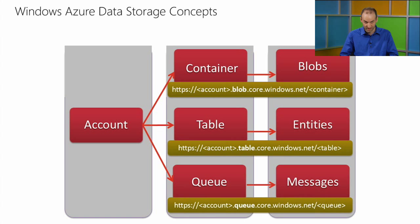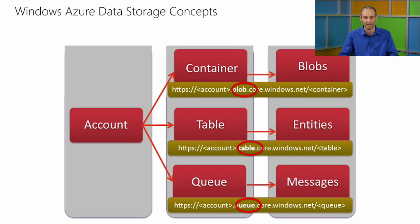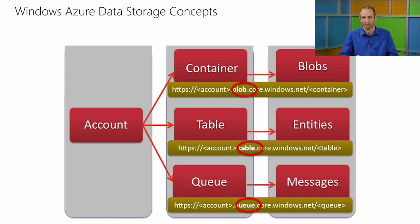For each of these services, we have a URL specific to that service, with your account name followed by the type of service. For blobs, it's accountname.blob.core.windows.net. For tables, it's accountname.table.core.windows.net. And queues are similar: accountname.queue.core.windows.net.